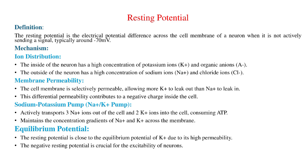Resting Potential: The resting potential is the electrical potential difference across the cell membrane of a neuron when it is not actively sending a signal, typically around –70mV. Mechanism: